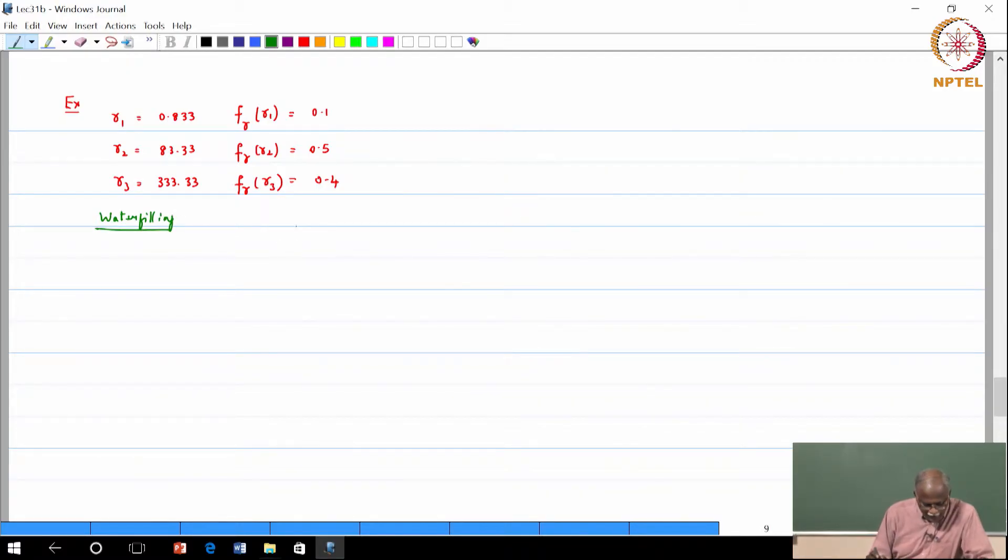So the concept of water filling basically says that some SNRs I would like to exclude. So looking through this, this looks like a bad SNR. So maybe I want to exclude this. So what we are saying is can I do water filling for the remaining 2 channel conditions? So i equal to 2 to 3.